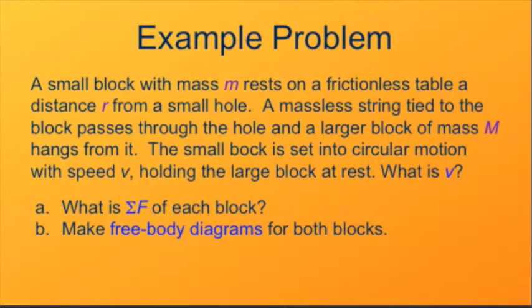The small block's net force is mv squared over r. There are canceling forces in the vertical direction, its weight down and the normal force from the table up. Since those forces cancel, they're not of interest to us and we can ignore them.